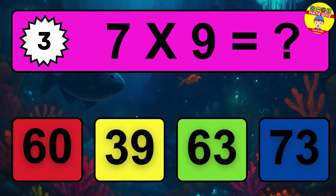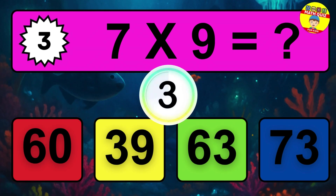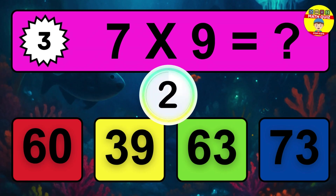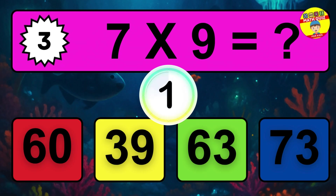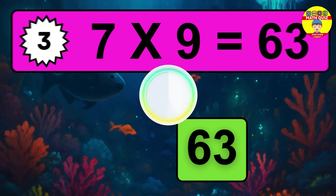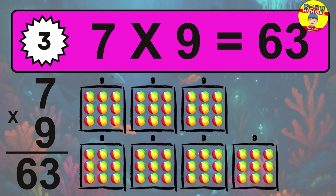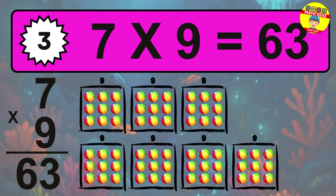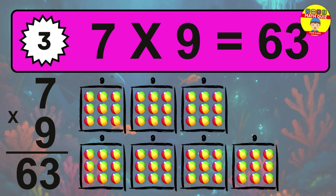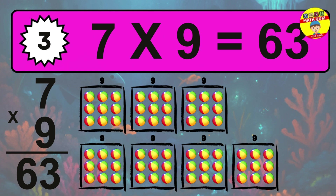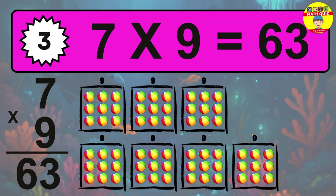Question 3. 7 times 9 equals what? The answer is 7 times 9 is 63. To calculate, we have 7 groups with 9 balls each one. So how many balls do we have? 63 balls.